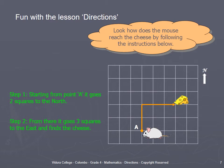How does the mouse reach the cheese by following instructions? Step number one: starting from point A, it goes two squares to the north. Step number two: from there, it goes three squares to the east and finds the cheese.